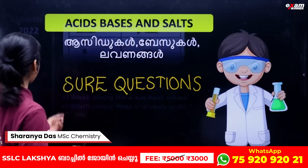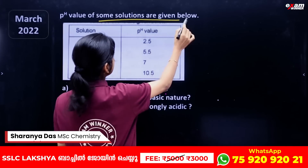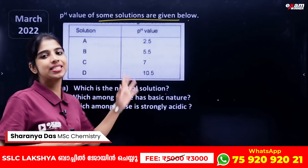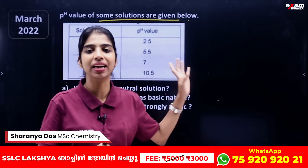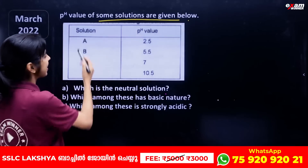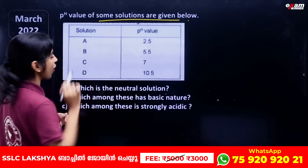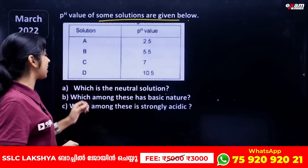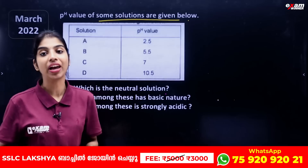The first question: pH values of some solutions are given in the table. Solution A has pH 2.5, B is 5.5, C is 7, and D is 10.5.